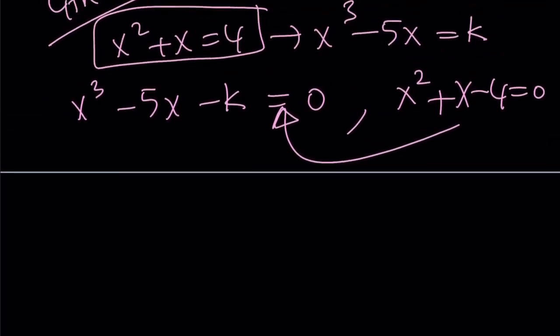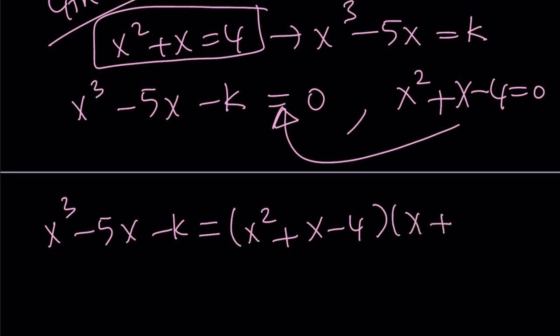So the cubic is divisible by the quadratic. What is that supposed to mean? It means that polynomial-wise, we can write it like this: this quadratic times a linear something, maybe m, is going to equal to the cubic.